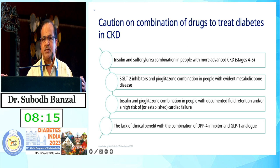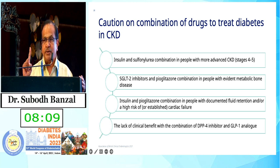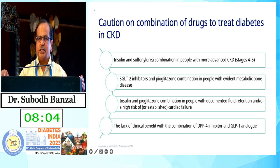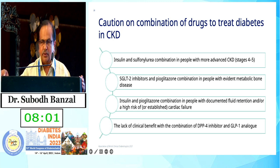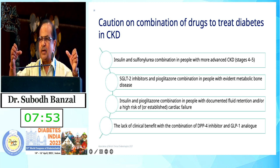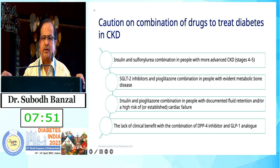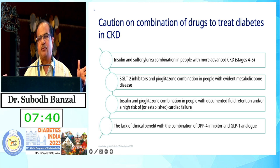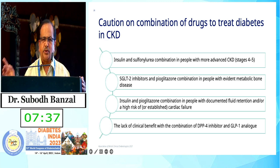Caution: when using insulin and sulfonylureas together in CKD stages 3 to 4, the main risk is hypoglycemia. When using pioglitazone and SGLT2 inhibitors — especially with metabolic bone disease — there are reports of increased risk, as osteitis fibrosa cystica is more common in CKD patients. Both insulin and glitazones promote fluid and salt retention, so avoid combining them if the patient has edema. There is also lack of clinical benefit in using both GLP-1 receptor analogues and DPP-4 inhibitors together — use either one.